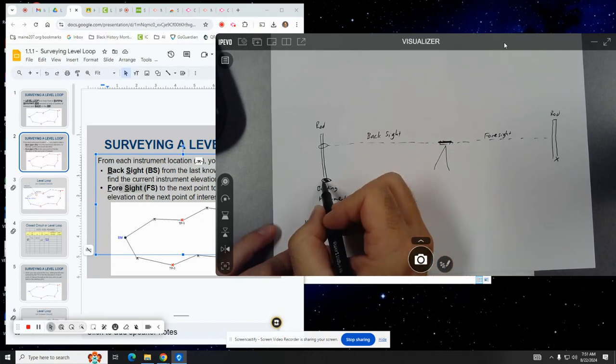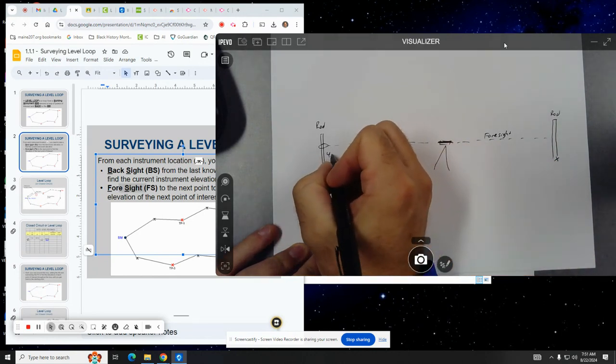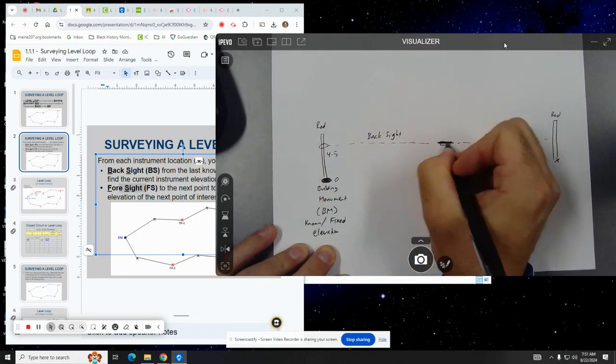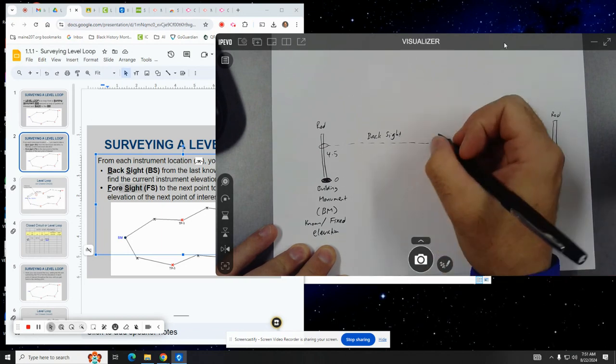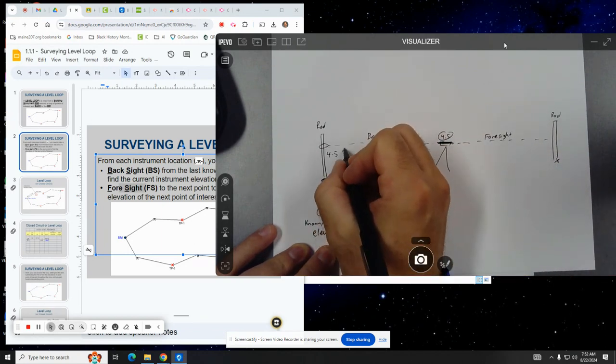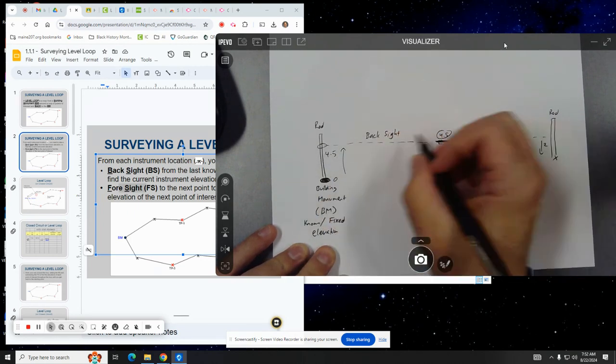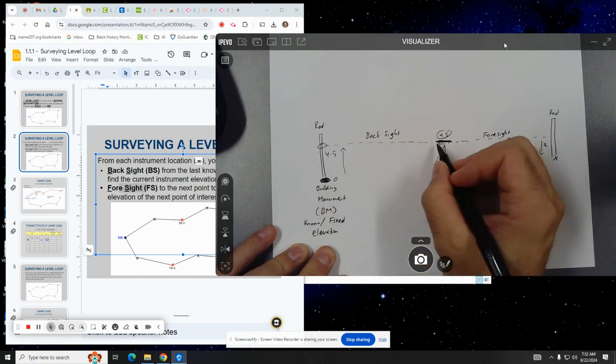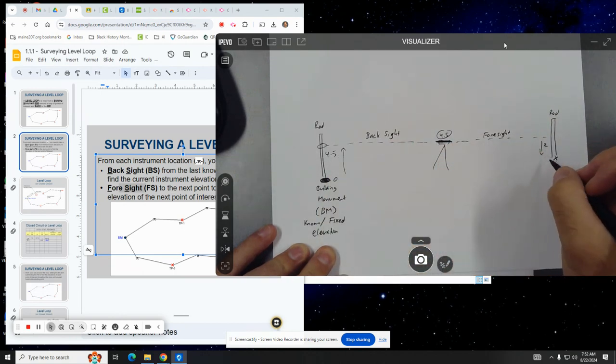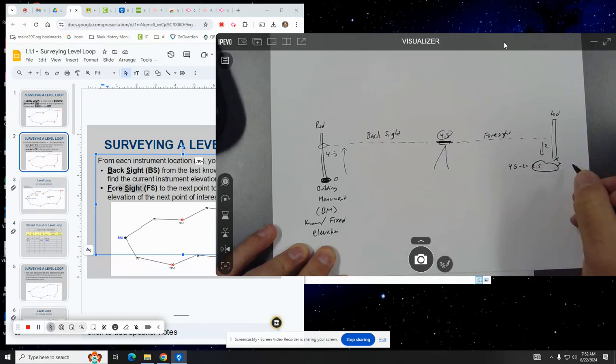So what they do is, from the building monument elevation, say that's like zero. If you get like a 4.5, that means the height of the instrument is 4.5 feet above here. So you kind of went up 4.5 feet. And then say this is like two. They had to then go, so you have to go up on the back sight and then to get the height of the instrument. And then down.